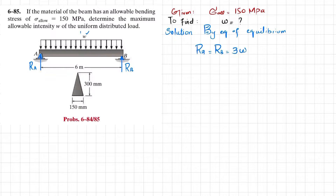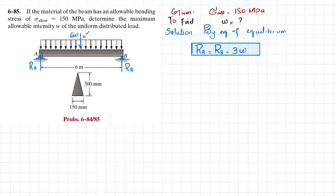The total load is 6w acting at the midpoint. Those are the reaction forces. We will now solve further using equations of shear force and bending moment — we will not use shear force and bending moment diagrams. Cutting the beam at any point at a distance x, we draw the free body diagram.